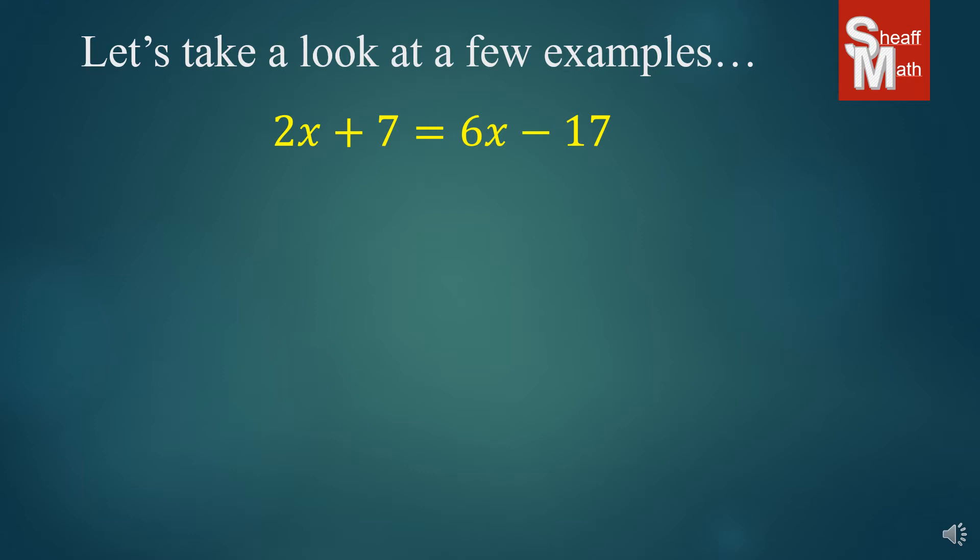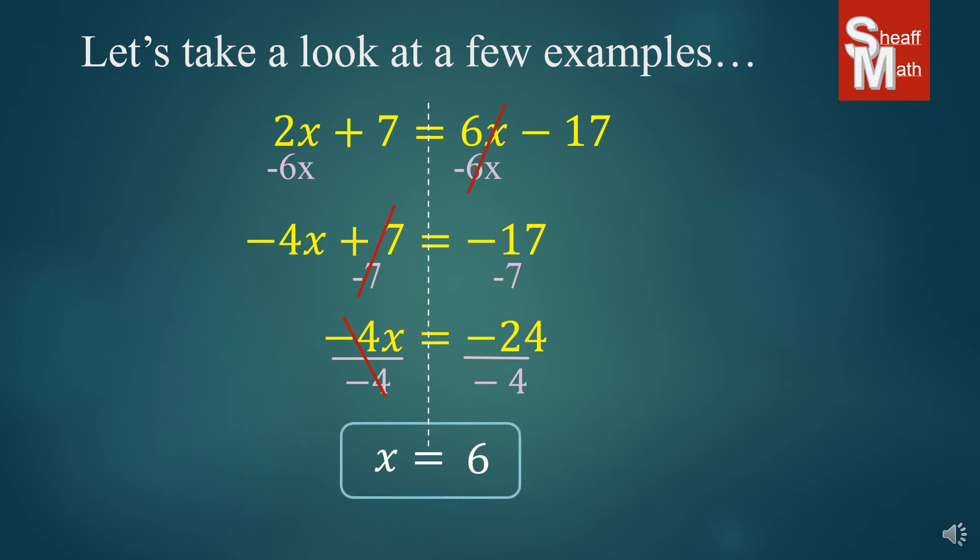So I'm going to take care of that right side x, 6x, and so I'm going to subtract 6x on both sides so I can cancel it out and I am left with negative 4x plus 7 equals negative 17. Now my two-step equation, I undo that plus 7 by subtracting it and I get negative 4x equals negative 24. I divide by negative 4 to cancel that multiplying negative 4 and I get x equals 6. Not too bad.